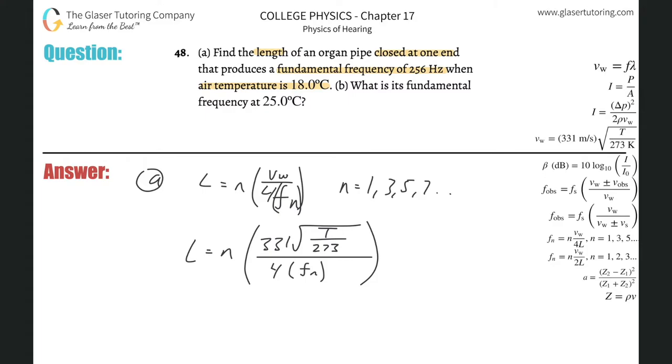They told us that we have a fundamental frequency of 256. The fundamental frequency is the first harmonic. So I know my n value. So n equals 1. Then it's 331 multiplied by the square root of the Kelvin temperature. They told it to me in Celsius, but that's just 273. We've got to convert it into Kelvin plus 18. That's then going to be divided by 273, all in that radical. Then divide it by 4 times that fundamental frequency they told us, aka the frequency of the first harmonic. So this is 256.